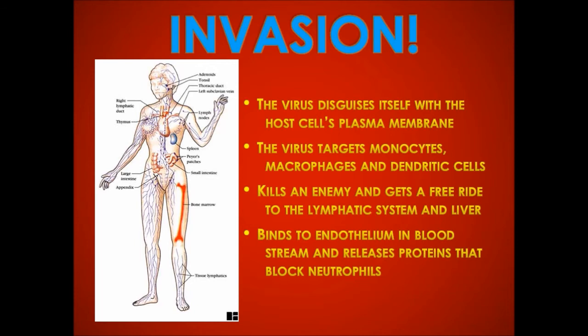The virus's ability to disguise itself with the host cell's plasma membrane is just one example of how effectively it evades the immune system. It targets immune cells, specifically monocytes, macrophages, and dendritic cells that are involved in antibody response. Not only does it keep these cells from doing their job, but it uses them to get to the lymphatic system and through the circulatory system. It uses a special protein called glycoprotein to stick to the endothelium which lines the lumens. These glycoproteins are then able to disrupt signals for the neutrophils so the virus can further evade the immune system.